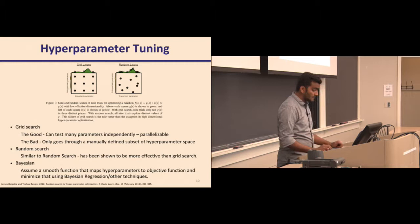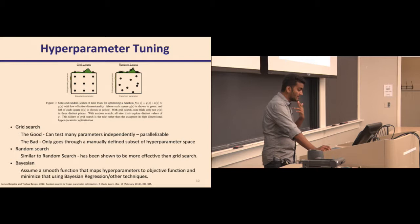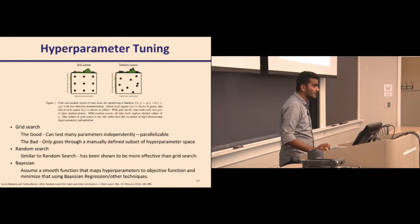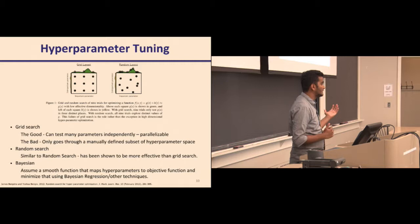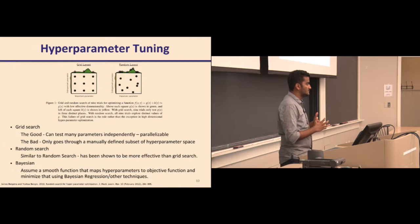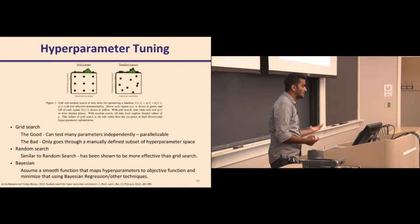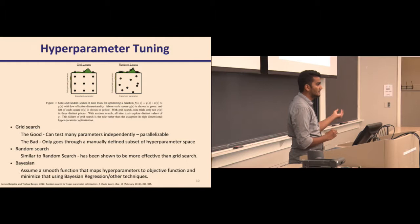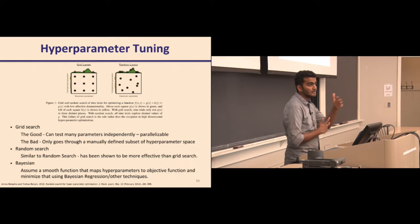For hyperparameter tuning, there are multiple approaches. Grid search is a simple technique where you define a set of hyperparameter values — for example, learning rates of 0.001, 0.01, and 0.1 — and try all permutations and combinations to find the best combination. The advantage is you can run these in parallel since each setting is independent. The downside is that you define the subset yourself, so you might miss the hyperparameter value that would actually help you reach the global minima.